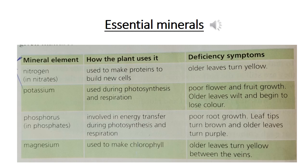To find out which minerals plants need, scientists start with a mixture of minerals and take one away at a time. Each mineral contains a different element. Together, the elements provide everything a plant needs for healthy growth.